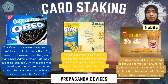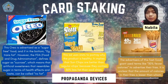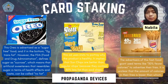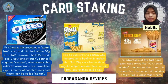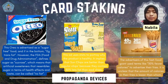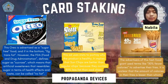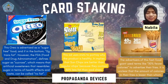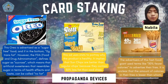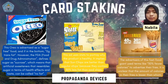Here are examples of card stacking. First is Oreo, advertised as a sugar-free food with 0g trans fat. However, the FDA defines sugar as sucrose, meaning that artificial sweeteners which resemble sugar in health effects and taste can still be labeled as no sugar. The second example is Sun Chips: the ad implies that Sun Chips are better than regular chips because they contain 30% less fat. The last example is Burger King, where advertisers use terms like '30% fewer calories' to advertise their fries, though it is unclear fewer calories than whom.